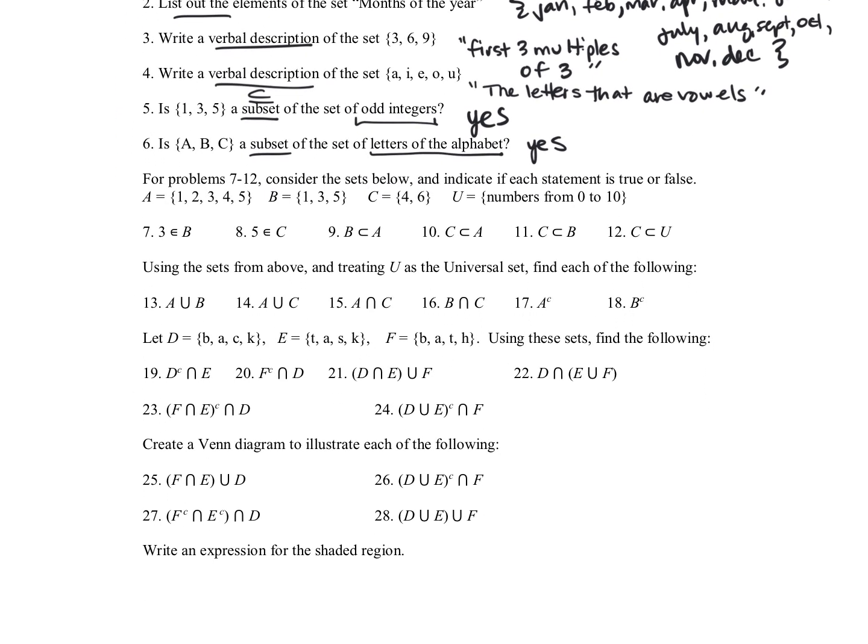For numbers seven through twelve, we're using those given sets A, B, C, and they also tell us what our universe is. So looking at this first statement, three is an element of B. So we look at B, and yes, that's true. Next, five is an element of C. Five is not in there, so that's false. B is a proper subset of A. So we need to make sure one, three, and five are all in A, and that is true.